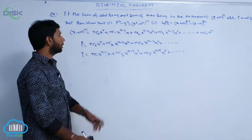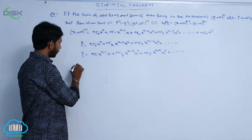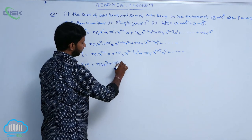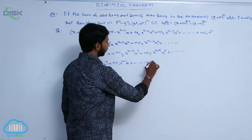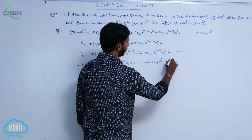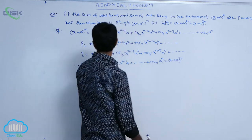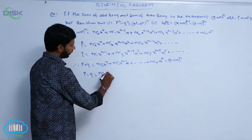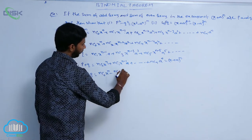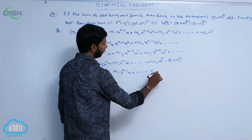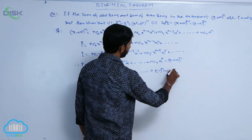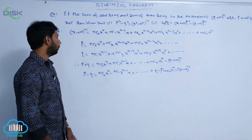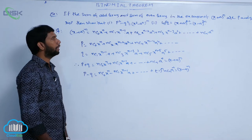Here p means the sum of odd terms and q means sum of even terms. Therefore p plus q equals nC0 · xⁿ + nC1 · x^(n-1) · a + and so on, which equals (x + a)ⁿ. And p minus q is equal to (x minus a) whole power n.